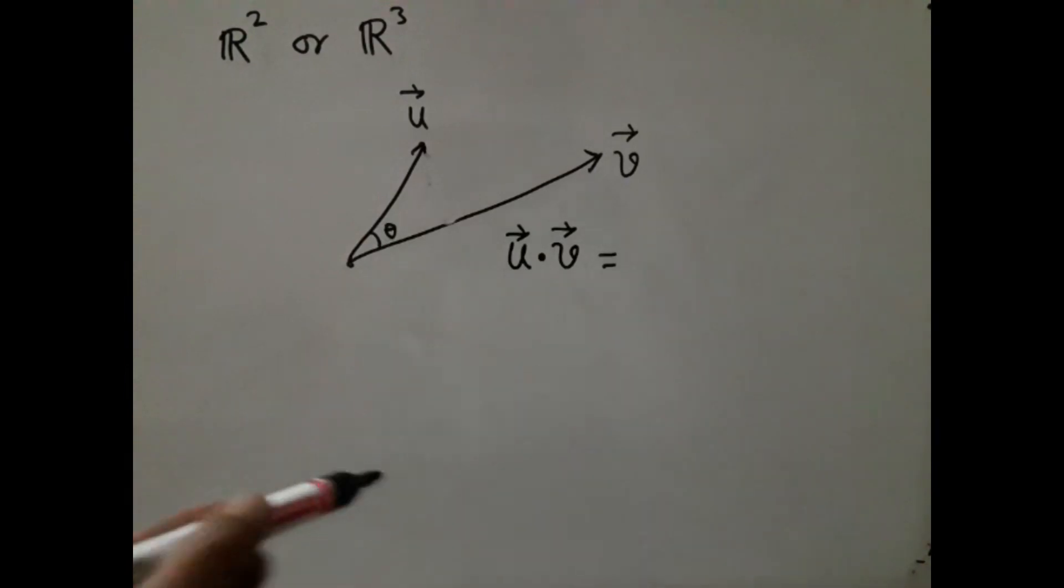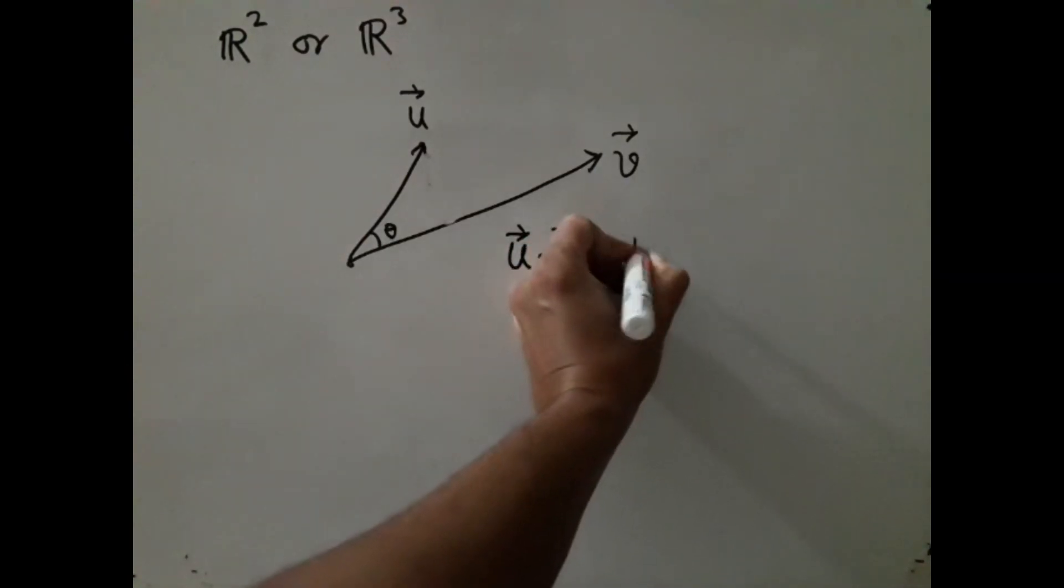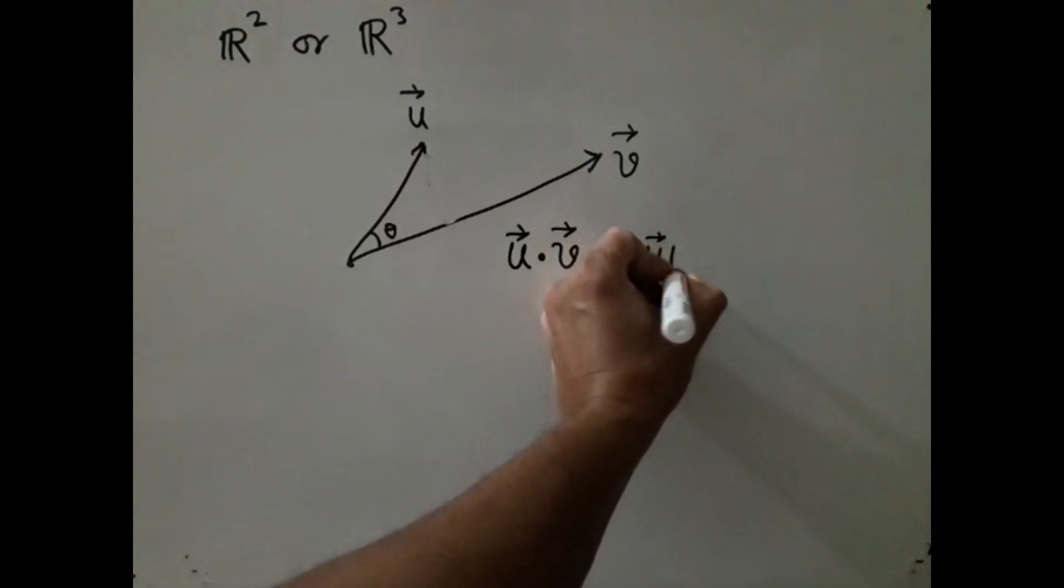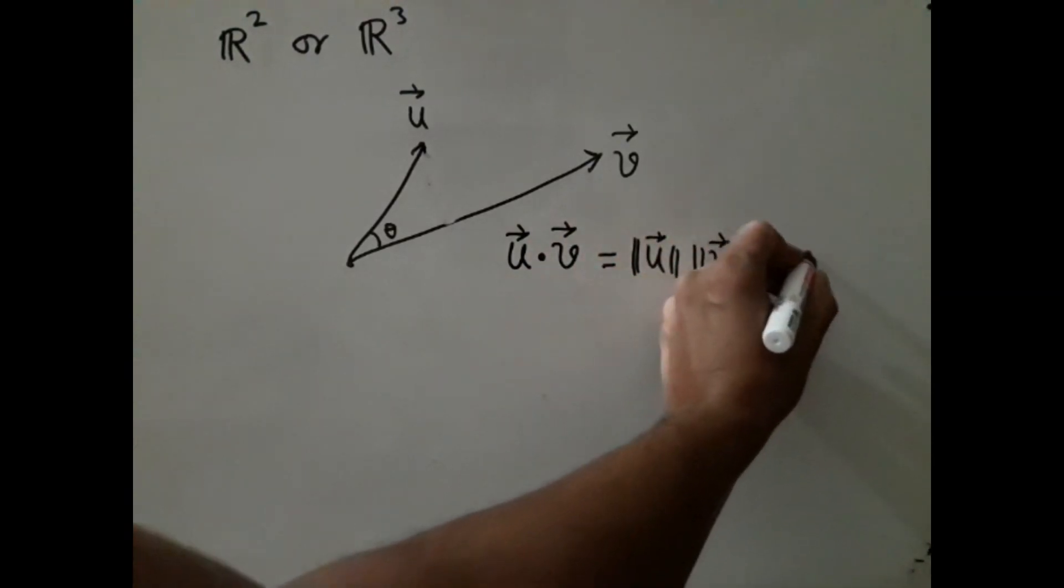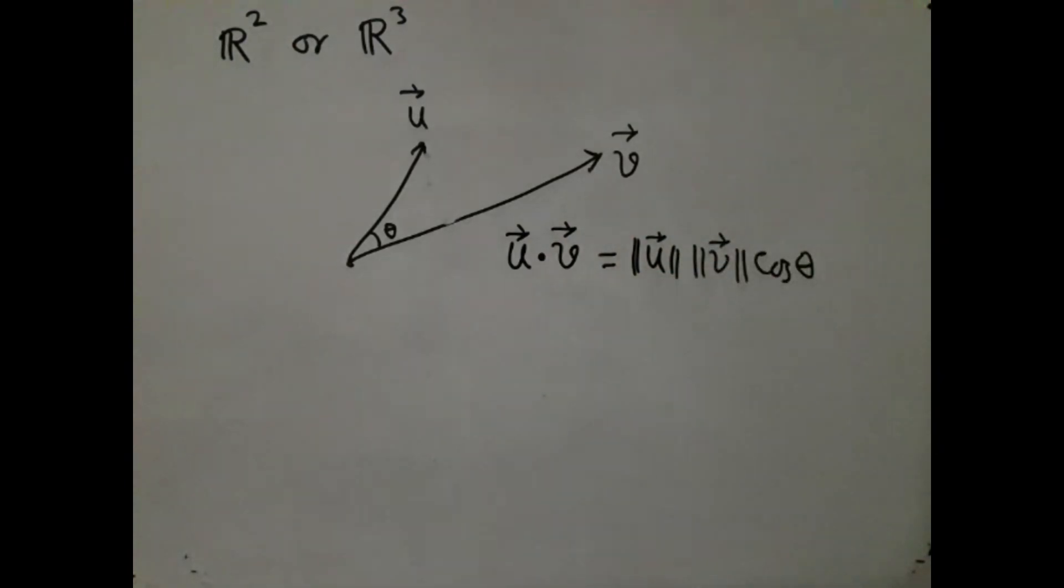Suppose we have these two vectors u and v in R^2 or R^3 and the angle between them is theta. In that case, we know u·v can be interpreted as |u| times |v| times cos(θ). This is something that we often use during our higher secondary physics.